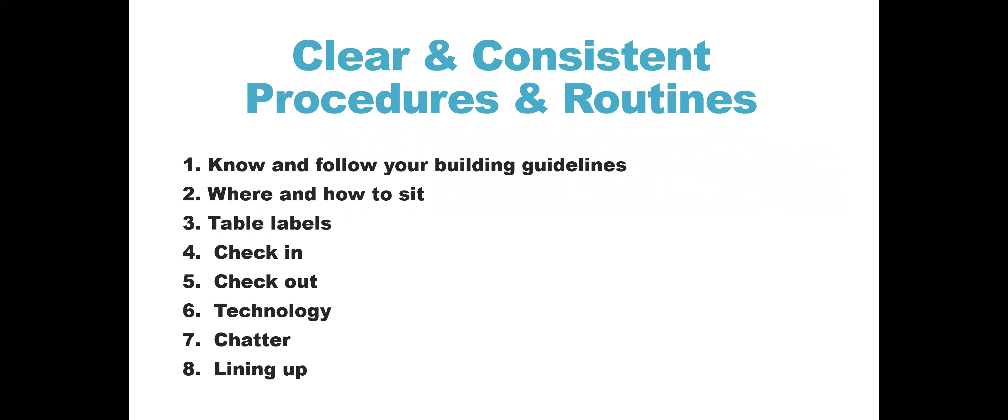What are the consequences if a student doesn't follow directions? What is it that your building leadership would like you to do? Is there a safe seat? Is there a buddy system? Is there some sort of procedure that students go through before consequences get to the administrator level? At what point do you contact the teacher, administrator, or security for improper behavior, and how do they want that handled? Knowing what those things are can help things go a little bit more smoothly for you.